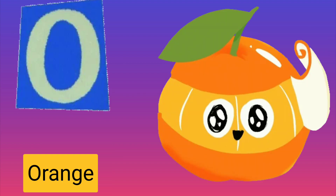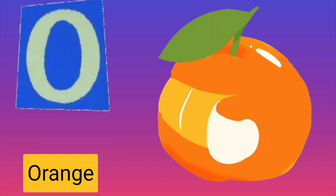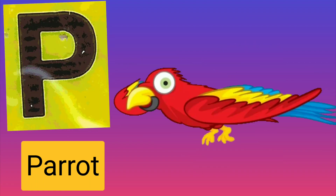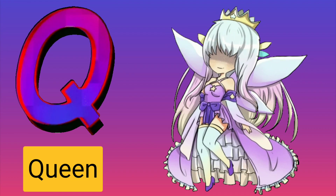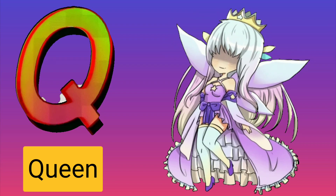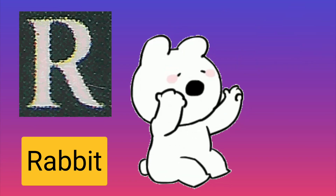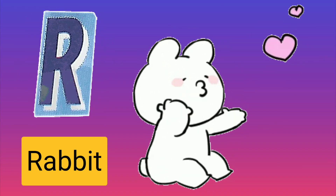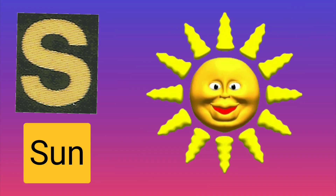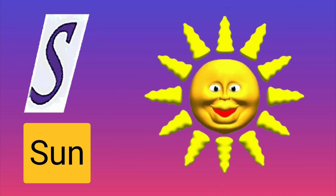N for nest, O for orange, P for parrot, Q for queen, R for rabbit, S for sun.